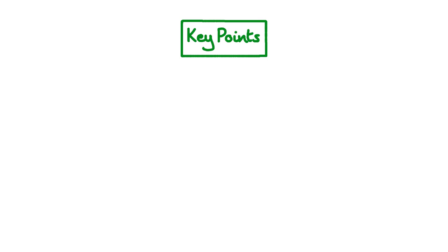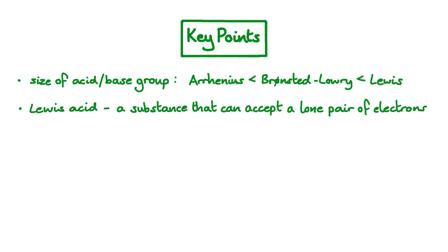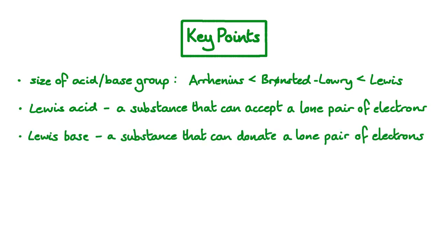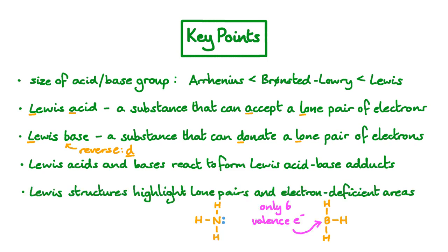Let's have a look at the key points. Arrhenius, Bronsted-Lowry, and Lewis described acids and bases slightly differently. Lewis's description covers the biggest range of substances. A Lewis acid is simply any substance that can accept a lone pair of electrons, while a Lewis base is the reverse — a substance that can donate a pair of electrons. Lewis acids accept lone pairs while Lewis bases donate lone pairs. You can remember this by taking the B and flipping it to make it look like a D. Lewis acids and bases react to form Lewis acid-base adducts. And finally, we can use Lewis structures to work out what's a Lewis base and what's a Lewis acid, by highlighting lone pairs or areas which are electron deficient.